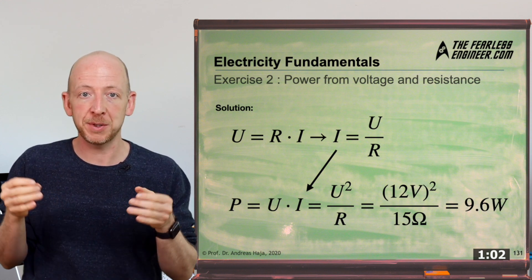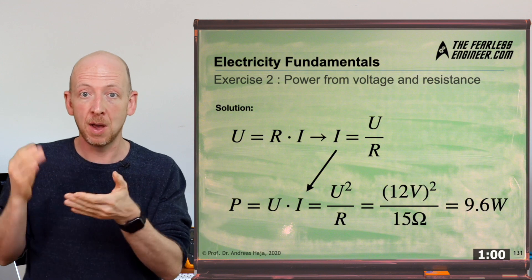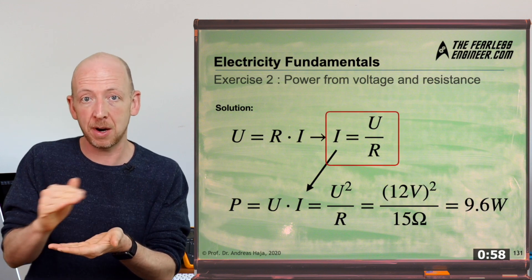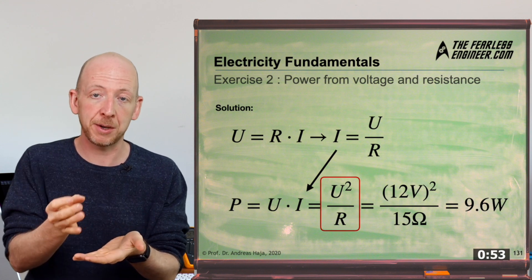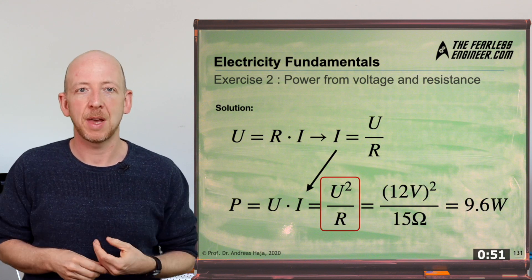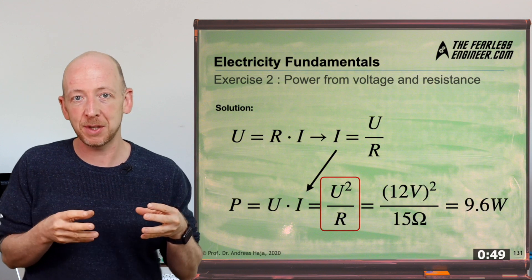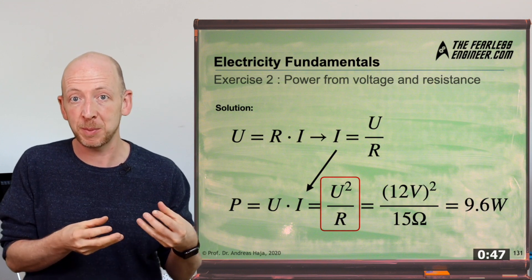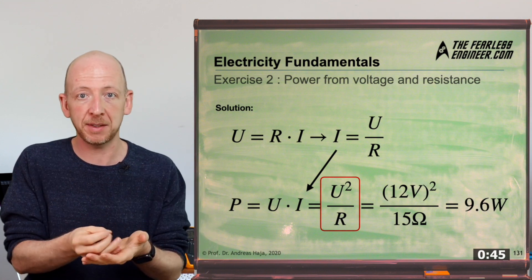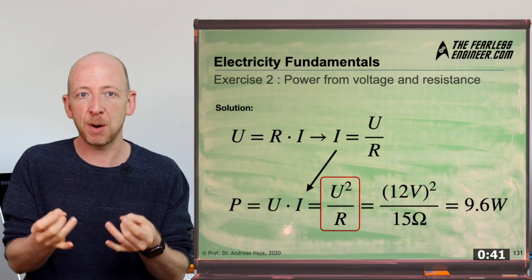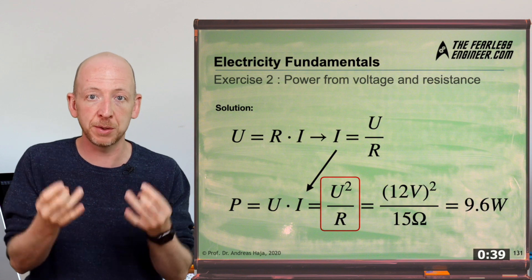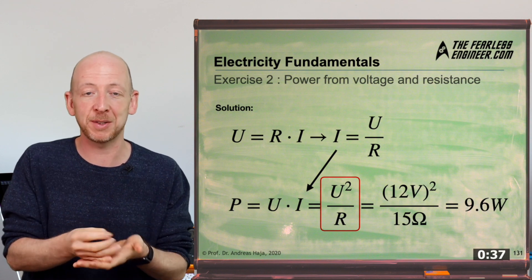To get there we have to first rearrange Ohm's law by the current, so I equals U divided by R. Then we insert this into the power law and get to the form power equals voltage squared divided by resistance. It's perhaps interesting to note that the voltage enters the power equation in a squared manner. This means that if we double the voltage we get a quadrupling of the power. So if you increase the voltage on a component, the power and thus the heat generated also grows to the power of two, which can be quite a lot in some cases.